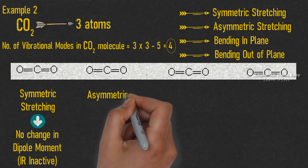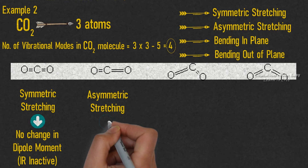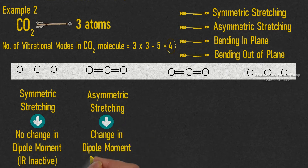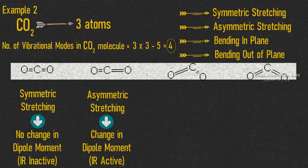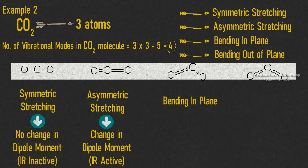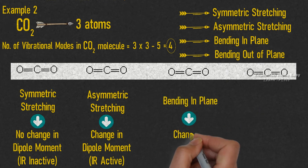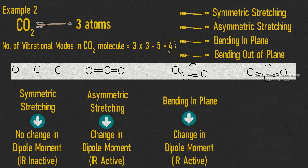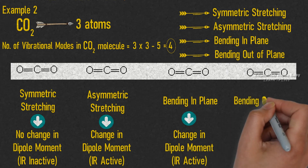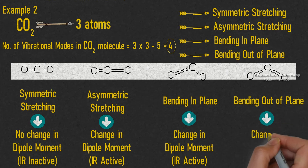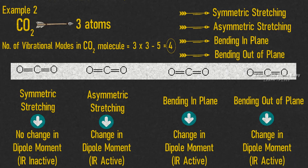The second picture represents asymmetric stretching. In this vibrational mode, there is a change in dipole moment, so it is IR active. The third picture represents bending in plane. In this vibrational mode, there is a change in dipole moment, so it is IR active. The fourth picture represents bending out of plane. In this vibrational mode, there is also a change in dipole moment, so it is also IR active.